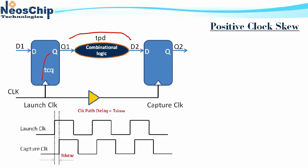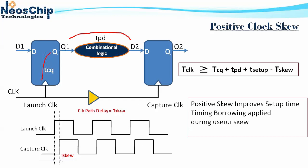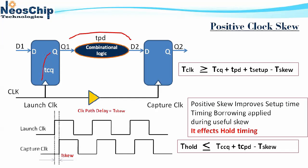Because of this skew, there is a change in the timing requirement for this sequential logic. If you see the timing equation, positive skew on the capture clock is improving your setup time — it delays the capturing of the processed data, which actually helps in meeting the setup time requirement. So positive skew improves setup time and helps in time borrowing during useful skew implementation in physical design. But there is a problem: positive skew affects hold time, and the hold time requirement gets impacted because of positive skew.